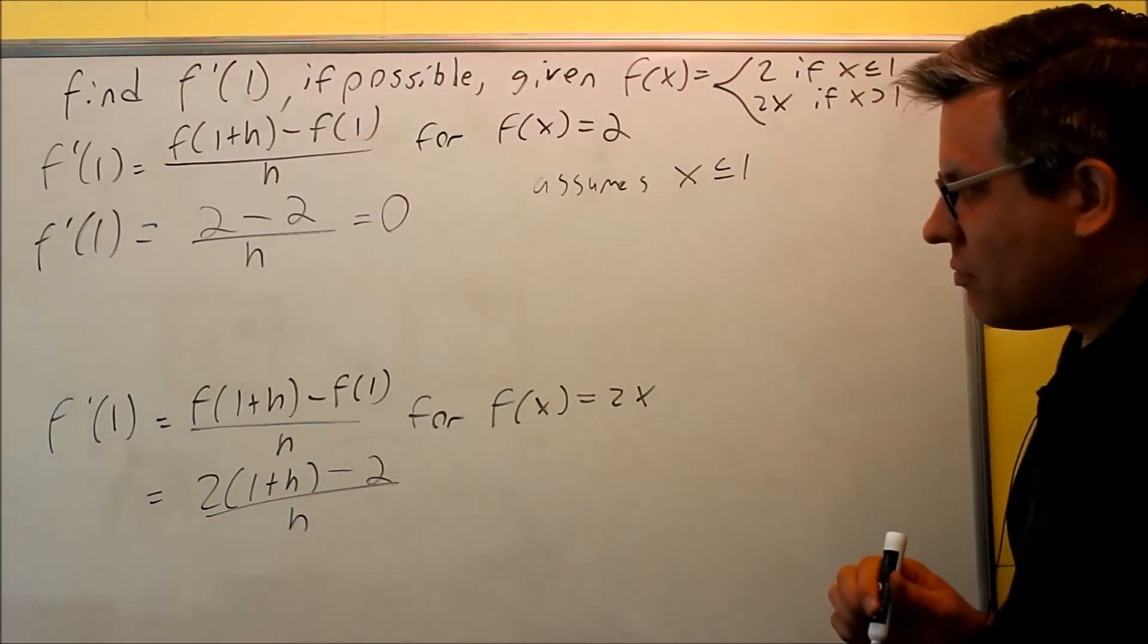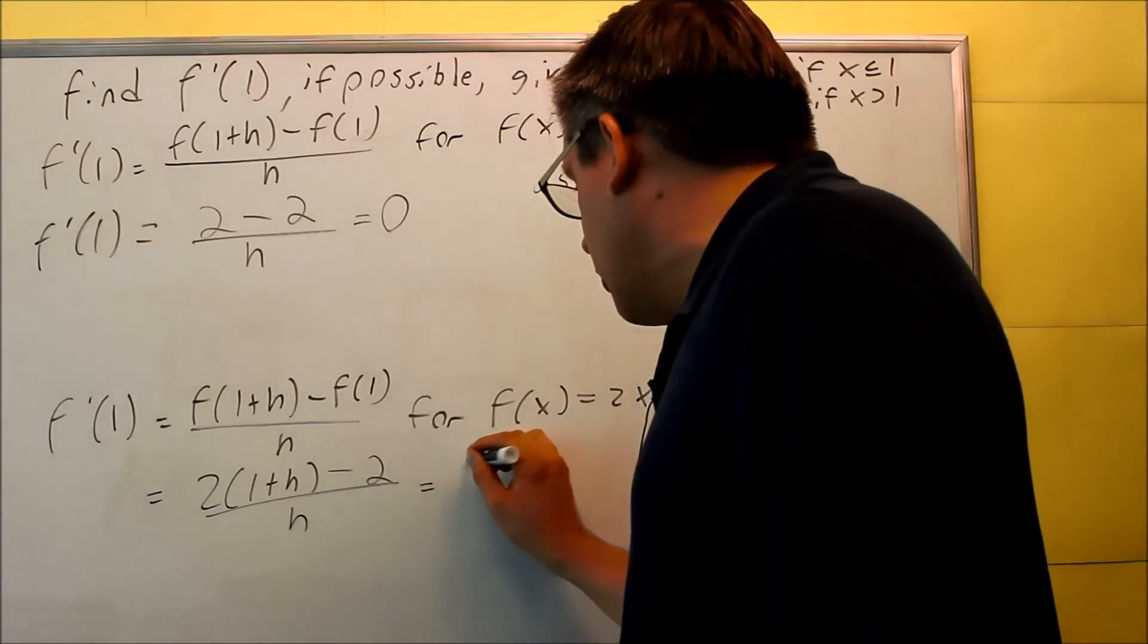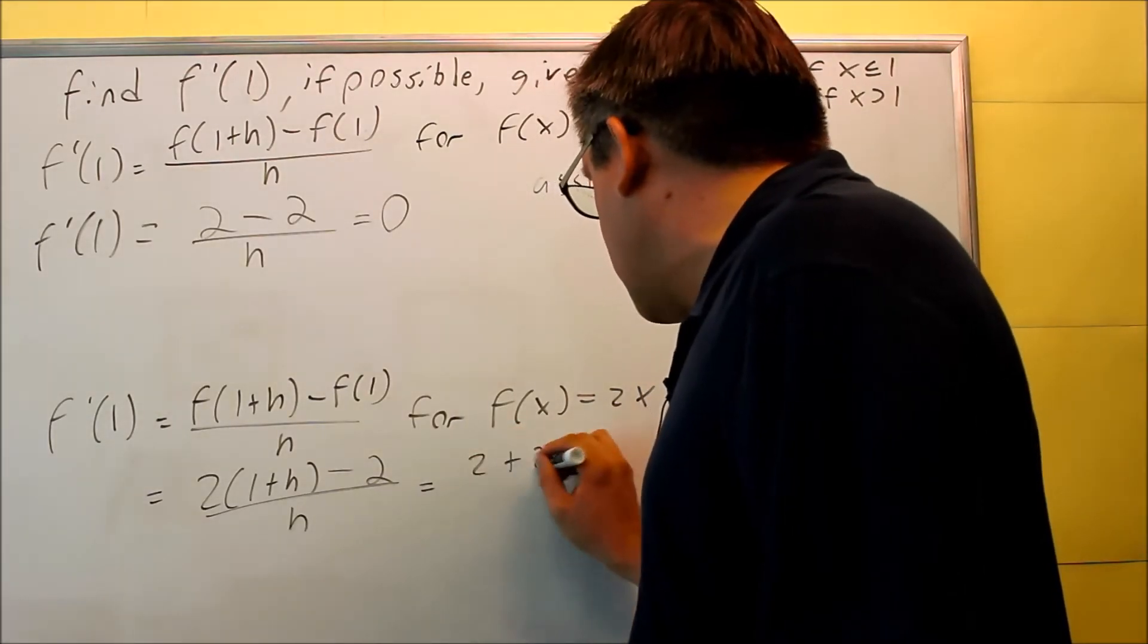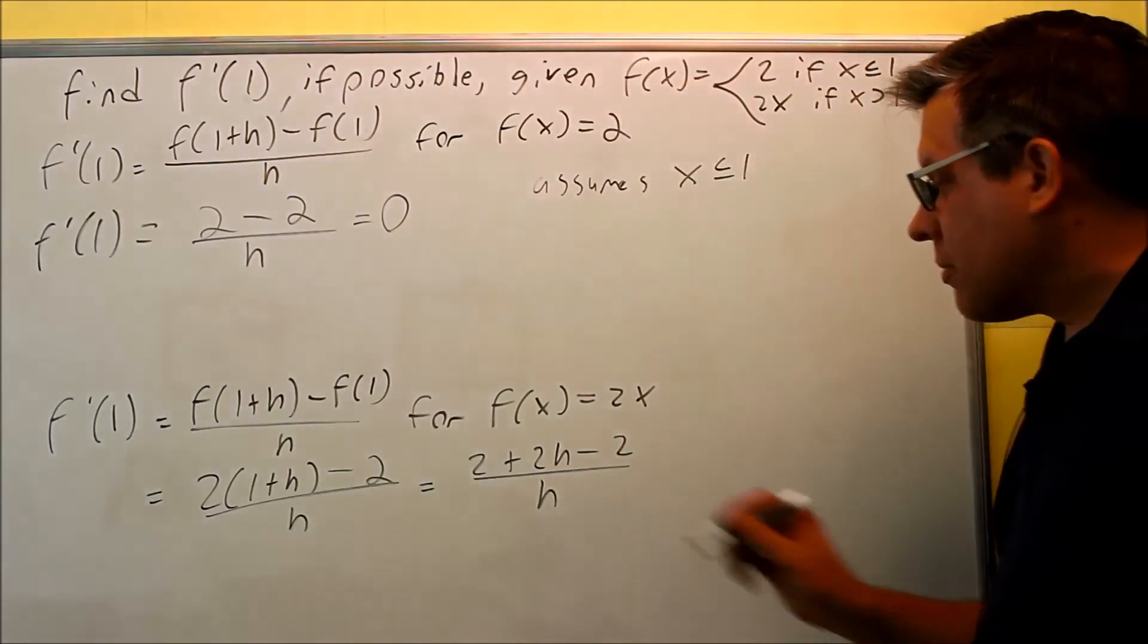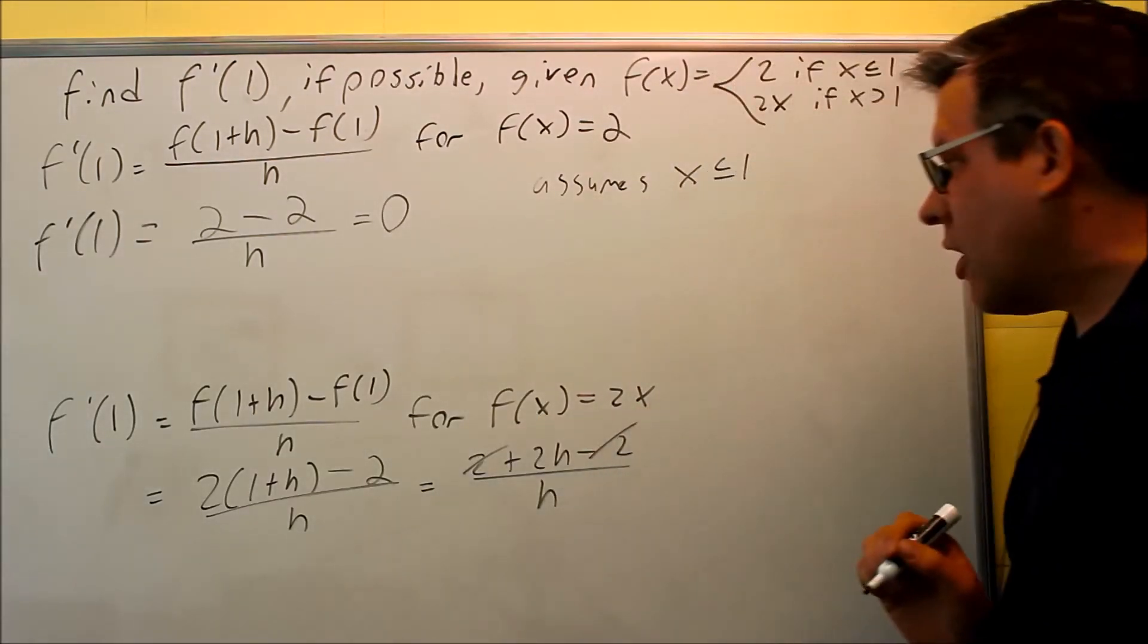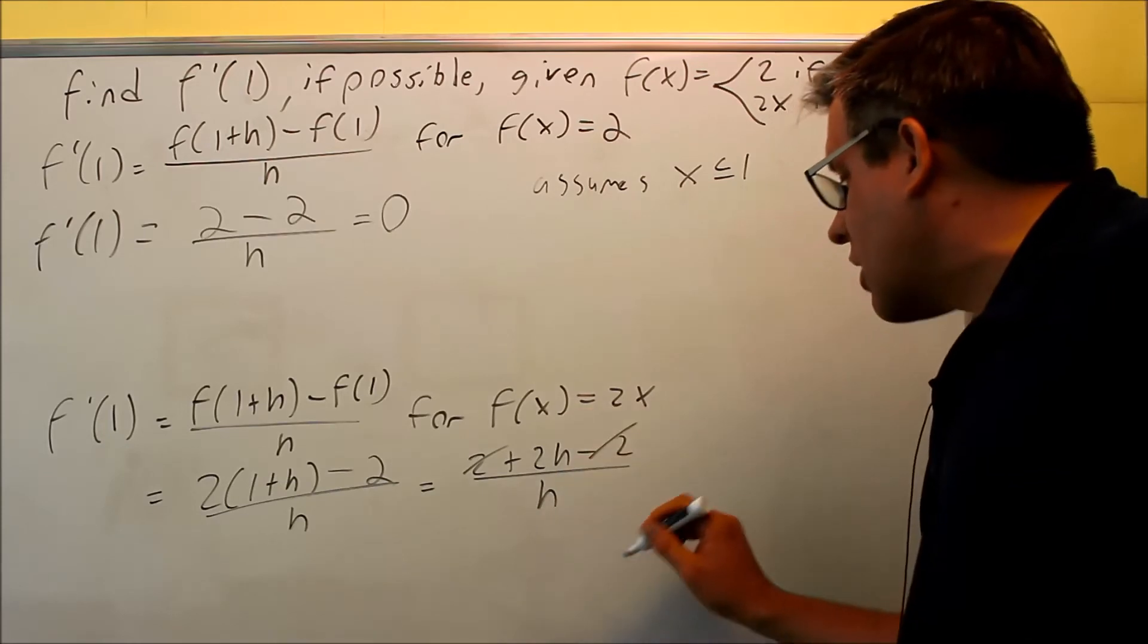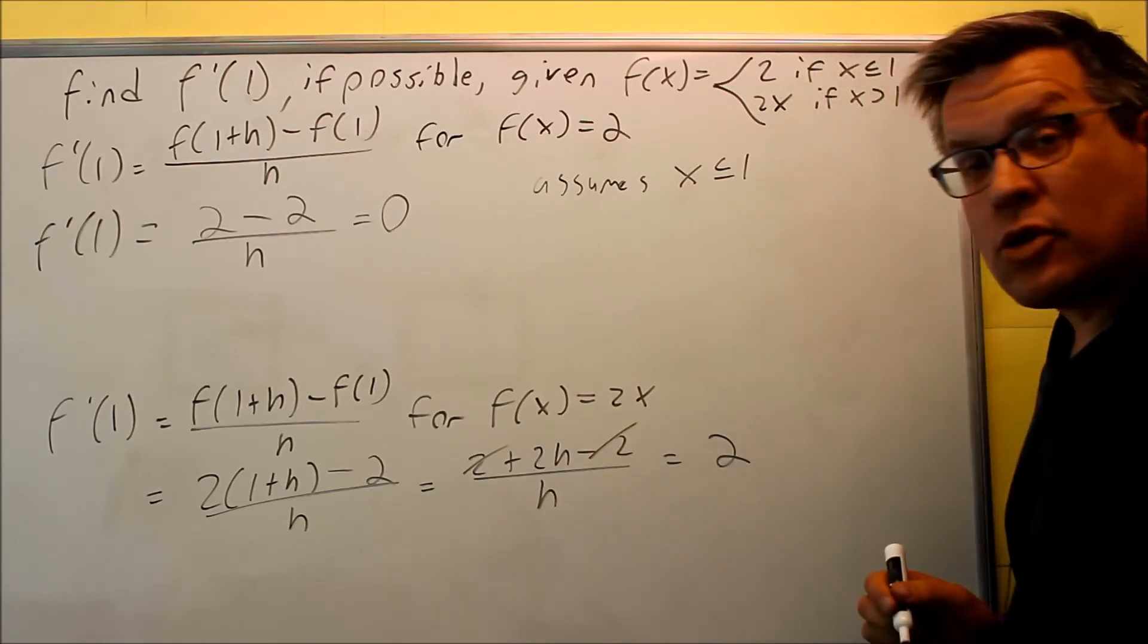I want to simplify this. So I'm going to do 2 plus 2h, and then minus 2, that's over h there. The 2s are going to cancel out, the h's cancel out also, and look what happens. We get 2.